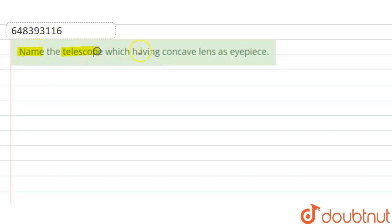Name the telescope which having concave lens as eyepiece. So here in the question we have asked that we have to name a telescope, type of telescope in which concave lens is used as an eyepiece lens. There is a telescope which is using concave lens and the concave lens serves there as eyepiece lens.